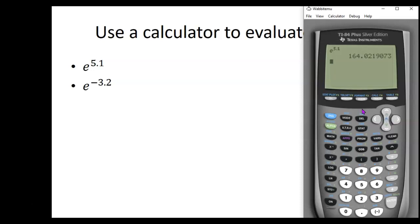And now let's try e to the negative 3.2. You should get 0.040762204, so about 0.04 as the value of e to the negative 3.2.